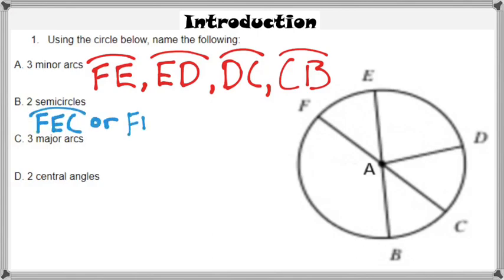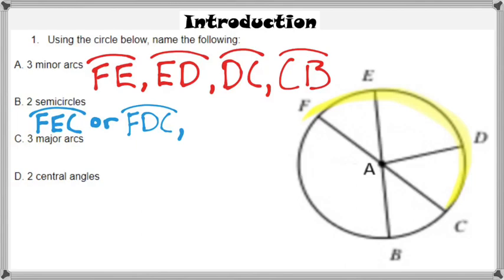A semicircle is an arc that is going to have exactly 180 degrees. Arc FEC is a semicircle because the diameter FC is right there. FDC is also another way to name that semicircle.